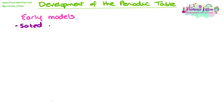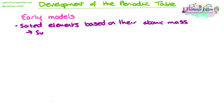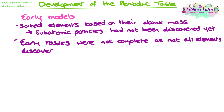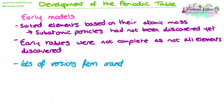We're now going to look at the development of the periodic table — how it developed, and who by. The very early models sorted elements based on their atomic mass, their mass number. It's important to remember these early models were written before subatomic particles had been discovered. Early models often had gaps because undiscovered elements needed to go there, and sometimes newly discovered elements were fitted into gaps where they didn't really belong. With no agreed version, different countries had different periodic tables, which was a problem for scientists.